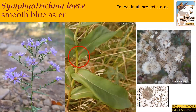Symphyotrichum laeve, or smooth aster, typically occurs in prairies, rocky glades, and dry open woods. This perennial plant is one and a half to three feet tall, branching on the upper parts. Alternate leaves occur along the entire length of the stems — oblong to ovate, becoming gradually smaller toward the top, with both lower and upper leaves clasping their stems. Small flowers with violet-blue to purple, and sometimes white, rays surround a yellow center, appearing in loose, open panicle-like clusters in the fall. Seed collection typically occurs around early November.